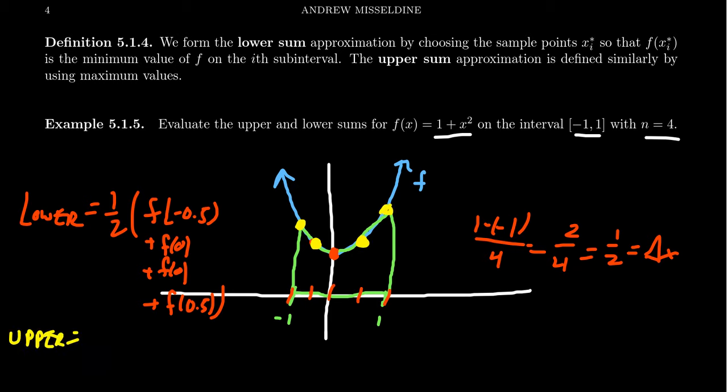So for your upper sum, you end up with one-half, the delta x is unaffected by that, you're going to get f of negative 1, plus f of negative 0.5, plus f of 0.5, plus f of 1. So it looks a little bit different when you get there, but the thing is, the lower sum will always choose the minimum of the interval, and the upper sum always chooses the maximum of the interval.